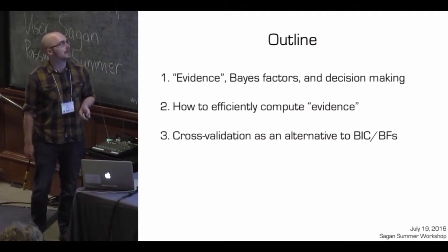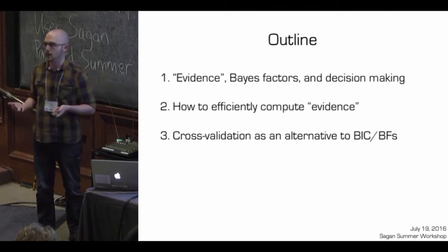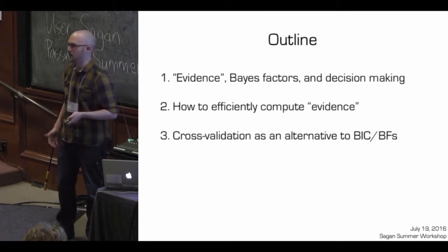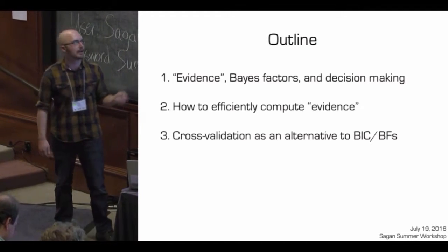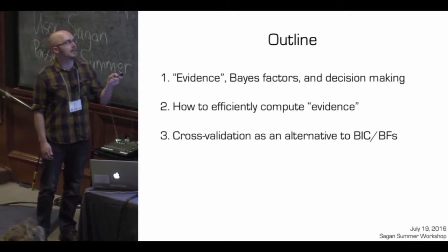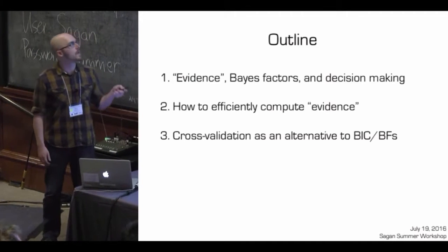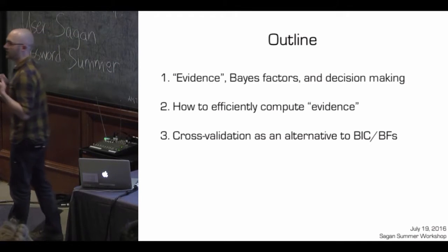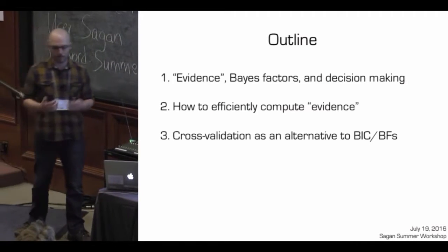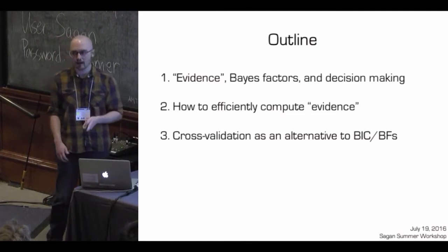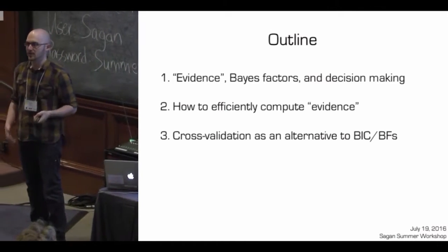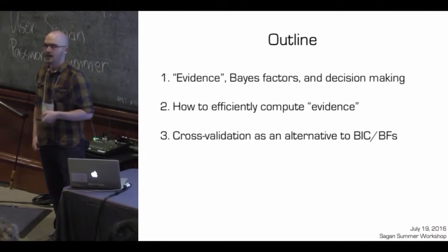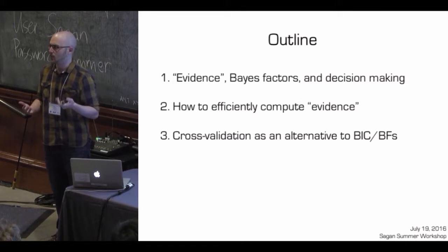My talk is broken down into three parts. The first part is intro material — defining what the evidence is and Bayes factors. You've seen this in Eric's talk and David Kipping's talk, but I'll also talk about how this plays into the philosophy of decision making. In the second part, I'll talk about how to efficiently compute fully marginalized likelihoods. And in the last part, I'll talk about cross-validation as an alternative to BIC or computing a Bayes factor — actually a frequentist method, but worth addressing.